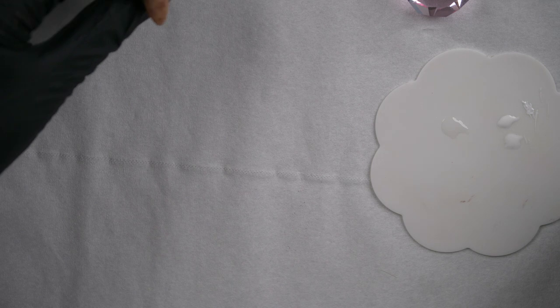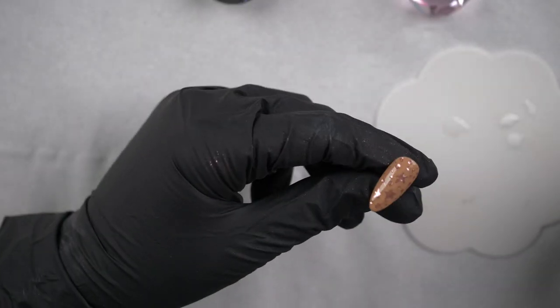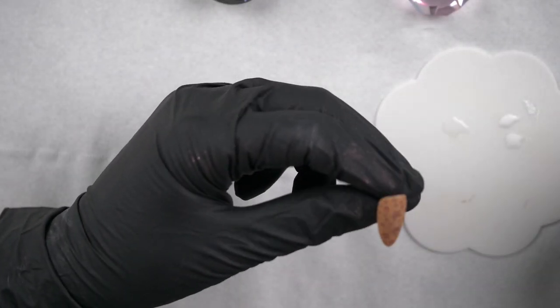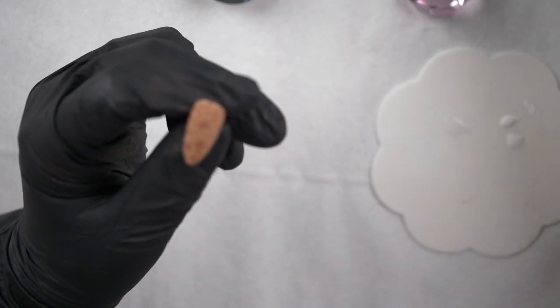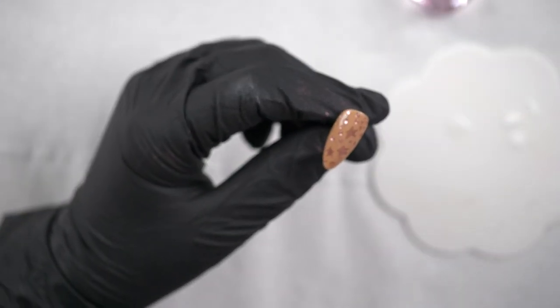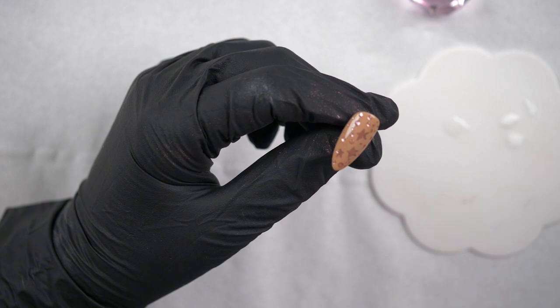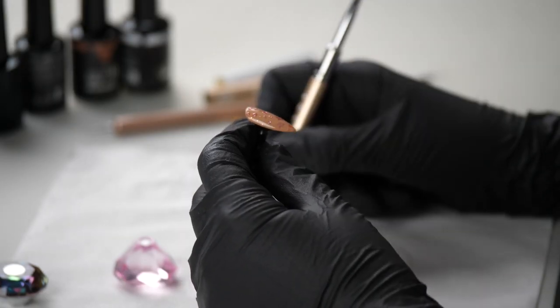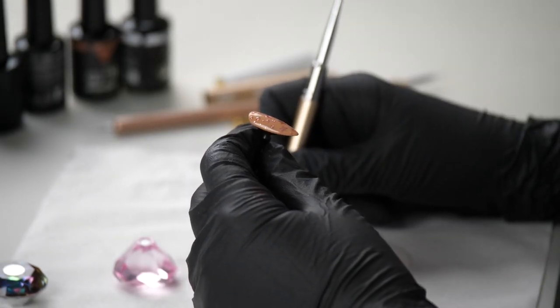So now that I have done that one, I feel like I need some white on this one to sort of bring it together. So I'm going to use the dotting tool end of my Vice Versa to pick up some white no-wipe gel paint.